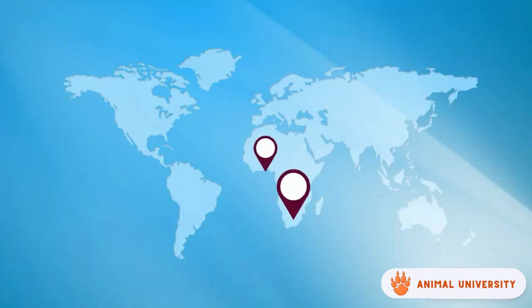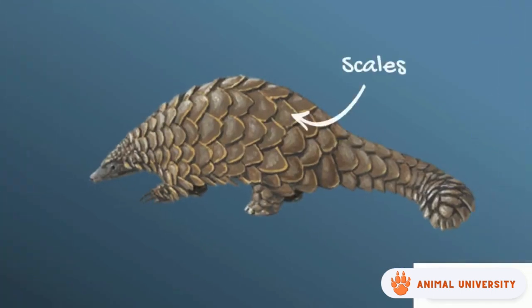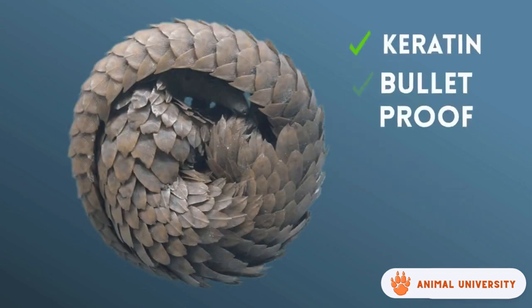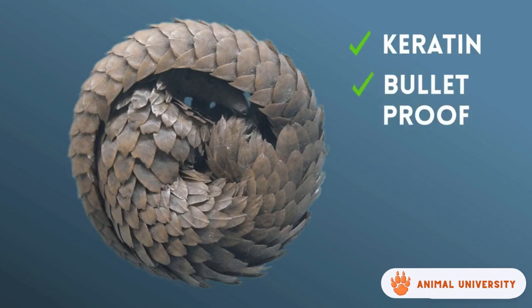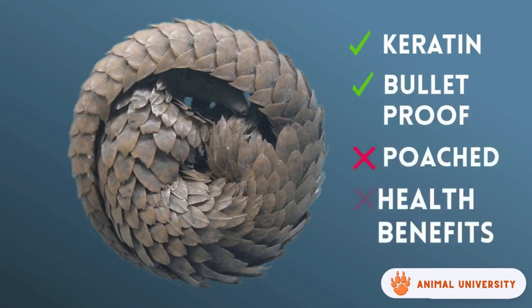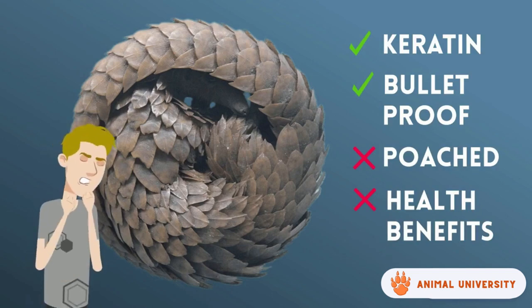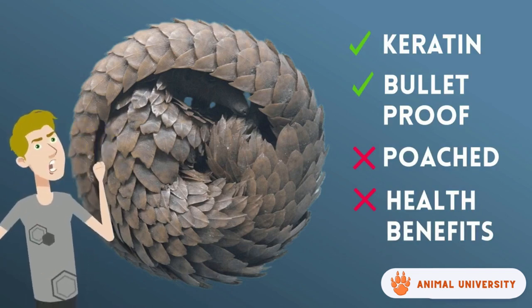They live in sub-Saharan Africa, the Indian subcontinent, China, and Southeast Asia. They have scales which are used for protection against predators when it curls into a ball. These scales are made up of keratin and are also bulletproof. However, these scales are also a liability as many people poach them as they believe that the scales have health benefits.